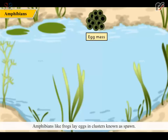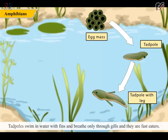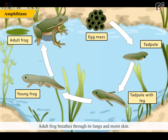Amphibians like frogs lay eggs in clusters known as spawn. After hatching, they will look like a small fish-like organism and are known as tadpoles. Tadpoles swim in water with fins and breathe only through gills, and they are fast eaters. They slowly develop their limbs and lungs and become frogs through metamorphosis. Adult frogs breathe through their lungs and moist skin.